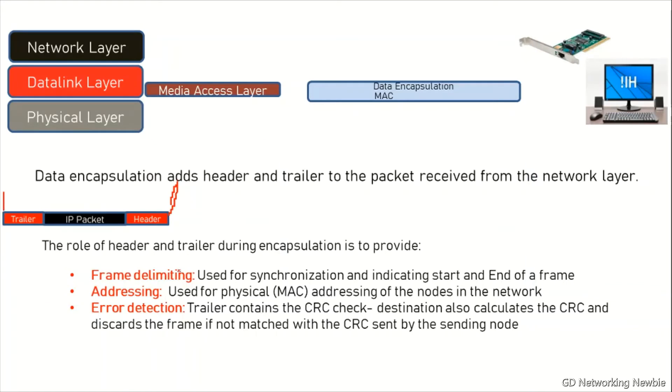Frame delimiting also provides the function of synchronization, so that both the sender and receiver should be synchronized to send information to each other. The header part also has addressing - each NIC card which is installed in the computer has an address called the physical address or the MAC address. So in this header we have the MAC address or the physical address of the node where you want to send the information.